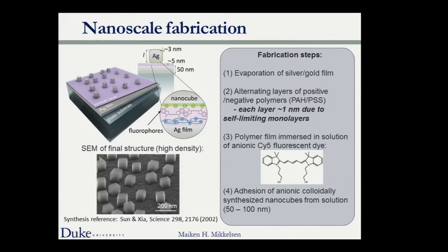We fabricate structures starting with evaporated silver or gold, then deposit a spacer layer using layer-by-layer deposition — alternating layers of negatively and positively charged polymers, each going down a single monolayer. This dip-coating process lets us build up alternating layers to exactly the desired thickness over wafer-scale areas or conformal surfaces. Then we immerse in dye molecule solution, spin-coat quantum dots, or put down 2D materials, and finally deposit slightly charged silver nanocubes that electrostatically adhere to the surface.